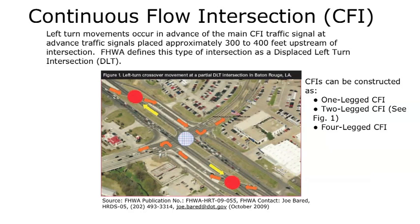The Federal Highway Administration defines this type of intersection as a displaced left-turn intersection. Throughout this presentation, I will be referring to them as CFIs, which seems to be the more popular term being used around the country. CFIs can be constructed as a one-legged CFI, a two-legged CFI — which is what Figure 1 is showing — and a four-legged CFI as well. This figure was taken from a Federal Highway publication referenced below, which is an excellent source on the subject.